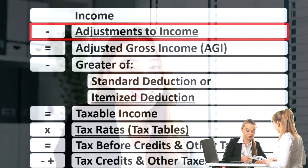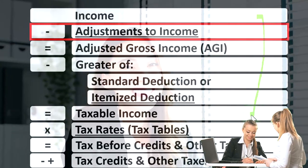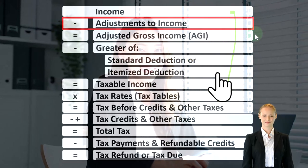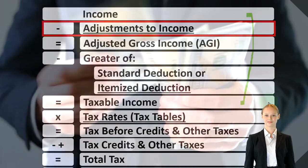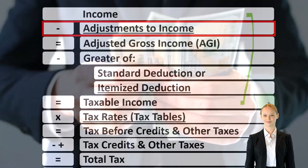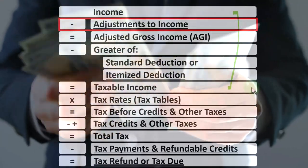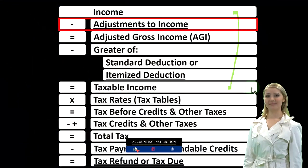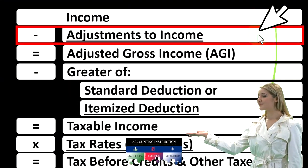Looking at our income tax formula, we're down on the second line — adjustments to income — remembering that the first half of the formula is basically an income statement where we have income minus the equivalent of expenses, those being the deductions, getting us down to the equivalent of net income, that being taxable income. Everything is flipped on its head in terms of objectives, because we want the taxable income as low as possible, as opposed to normally where we want the net income as high as possible.